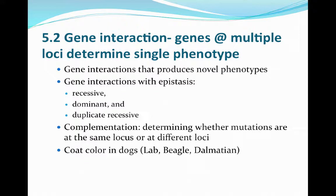In the animal breeding world, we call this complementarity, and this is where the genome actually works to determine whether mutations are at the same locus or at different loci. Finally, we'll end this section of Chapter 5 talking about coat color in dogs. There are going to be three different online lecture links for Section 5.2.